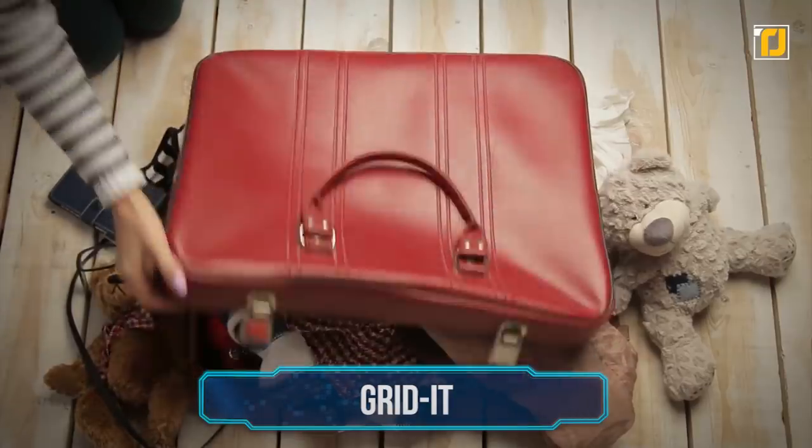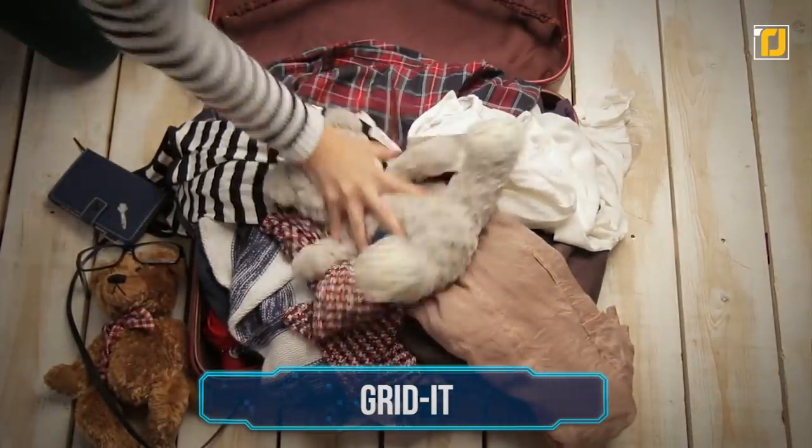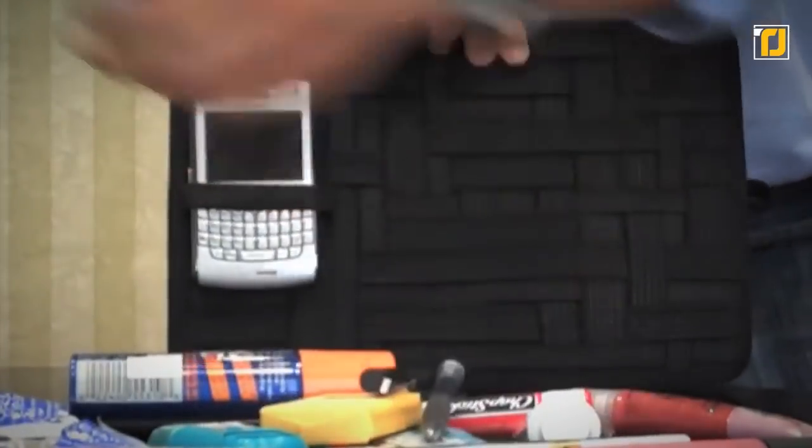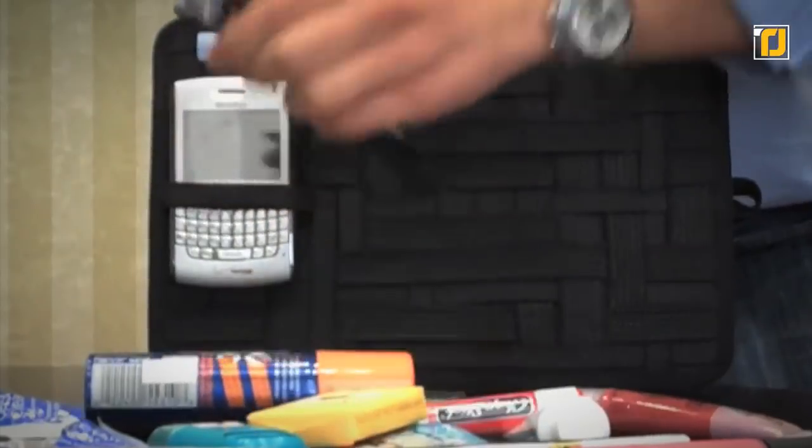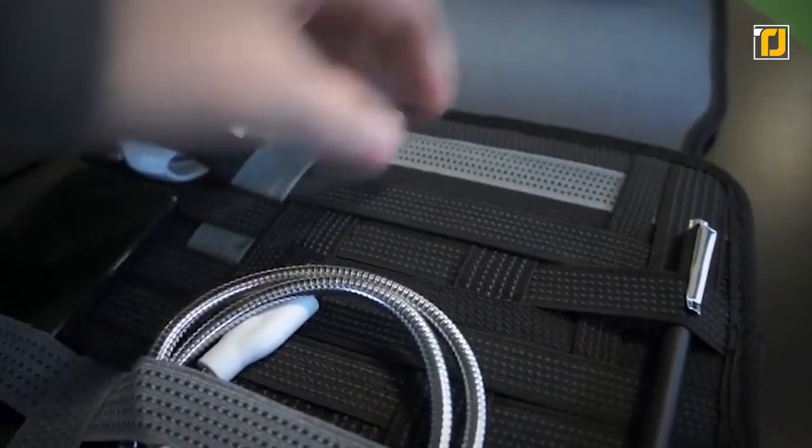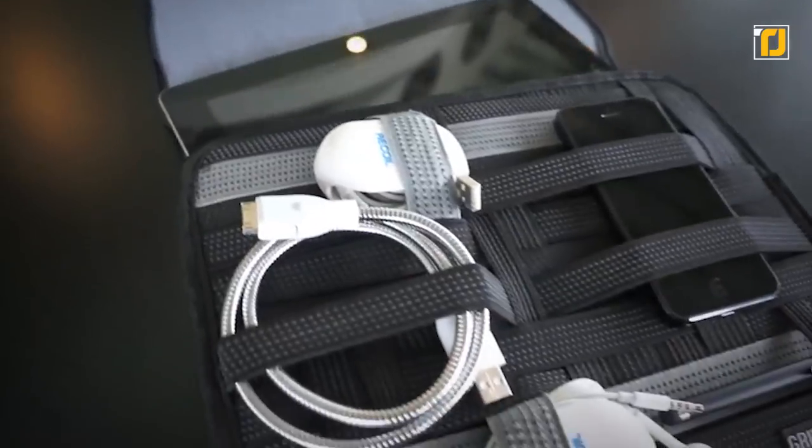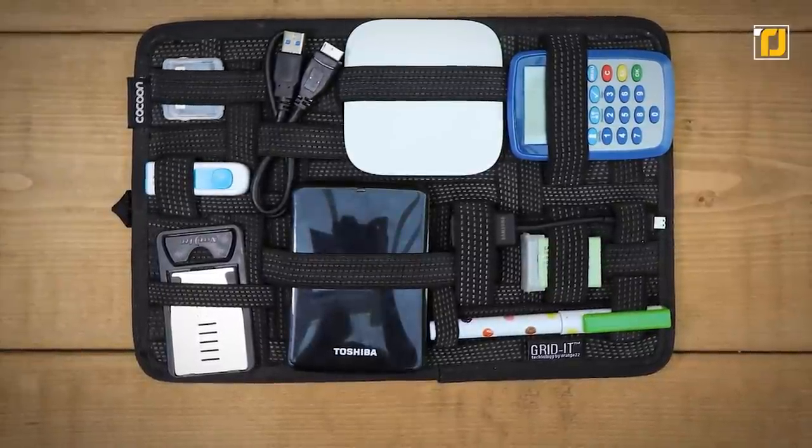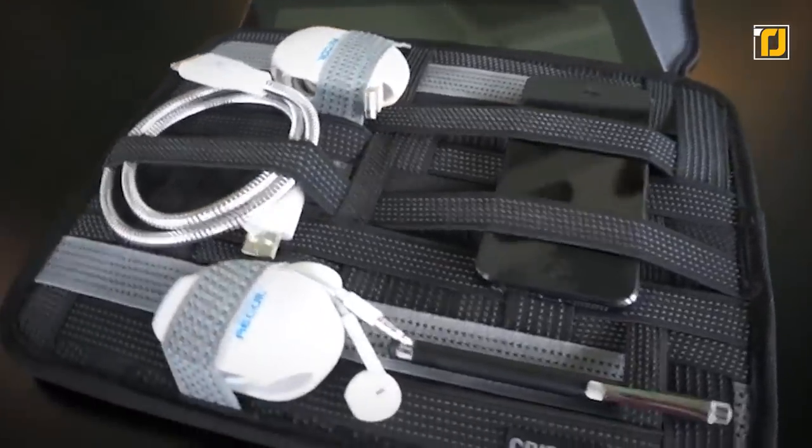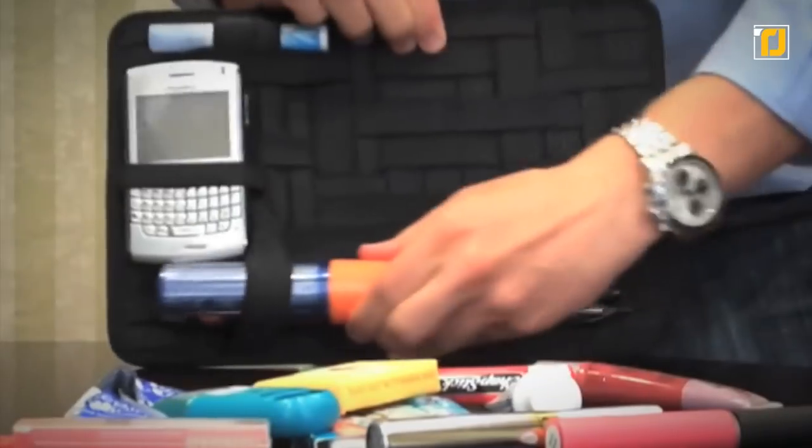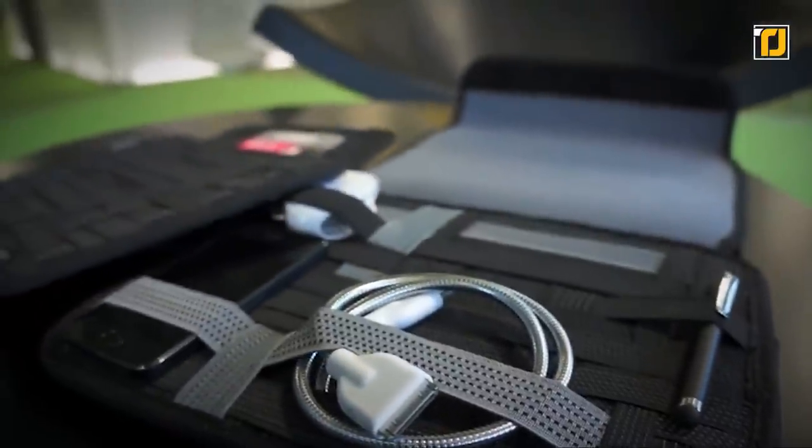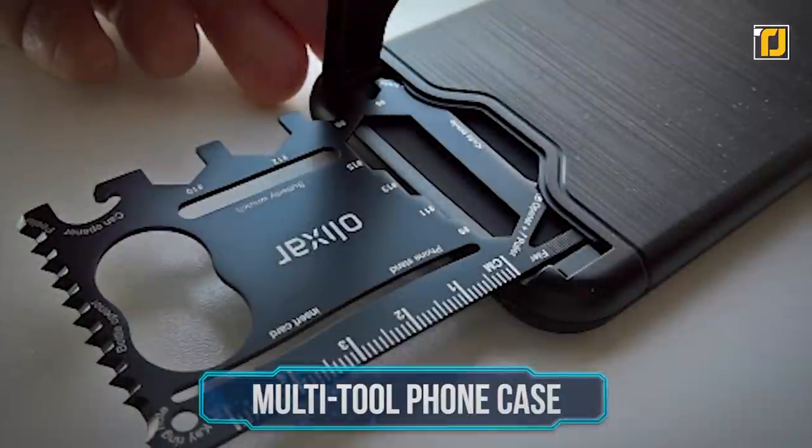If having an organized space is important to you, then here is the perfect item for you. The Grid-It. It's a simple tool that will hold your essentials very safely. It allows you to keep your phone, charger, headphones, and anything you can fit in it. Other than that, it's pretty easy to use, since you just need to tuck your items under elastic straps. And because of how compact it is, you can travel with it anywhere. Or just place it in your workplace.